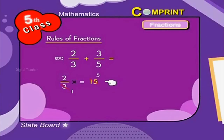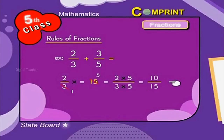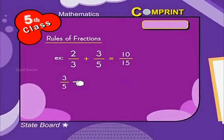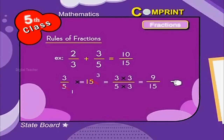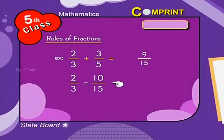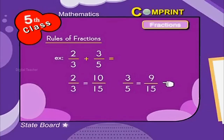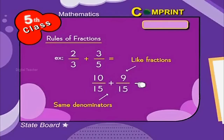For 2 by 3, multiplying by 15: 3 fives are 15, 2 fives are 10, so that gives 10 by 15. For 3 by 5, multiplying by 15: 5 threes are 15, 3 threes are 9, so that gives 9 by 15. So 2 by 3 equals 10 by 15 and 3 by 5 equals 9 by 15. Now we can add both fractions: 10 by 15 plus 9 by 15 equals 19 by 15.